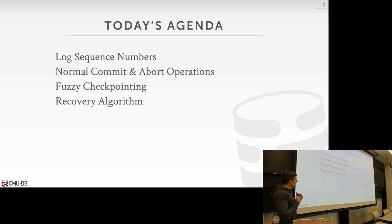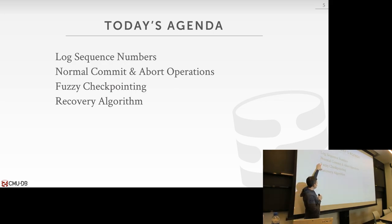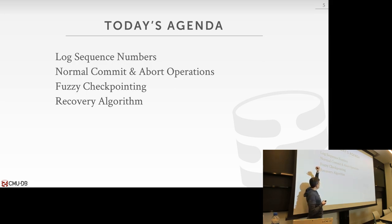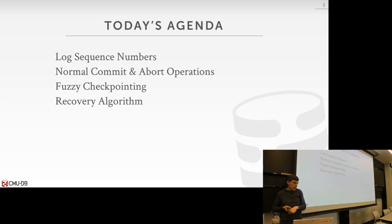Today's agenda: we're going to first talk about how the execution process of transactions during regular normal processing is going to be slightly different. We're going to introduce this idea of log sequence numbers and the extra steps we do for commits and aborts and fuzzy checkpoints. Then we'll finish up talking about how we actually do the three-phase recovery algorithm as defined by ARIES.